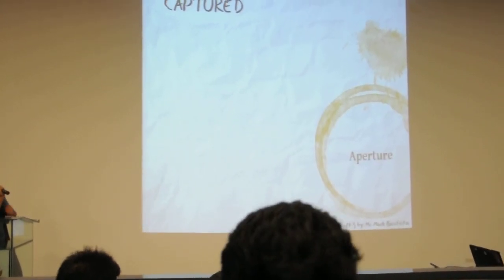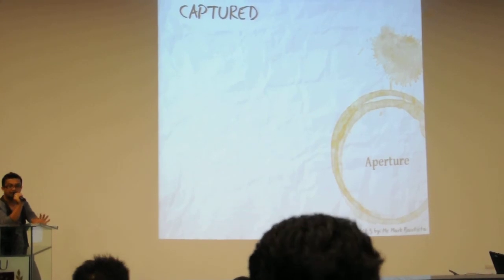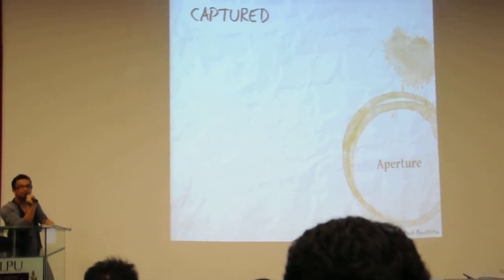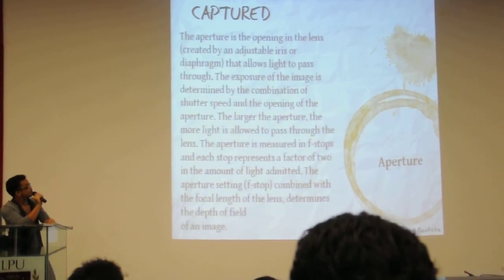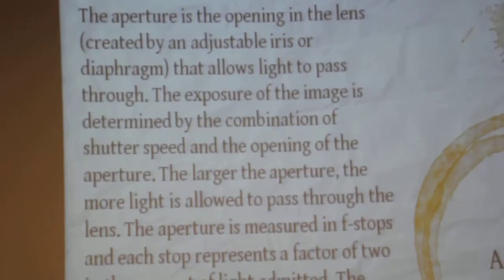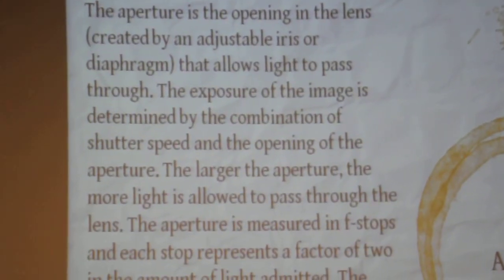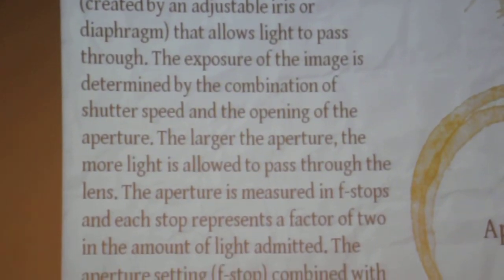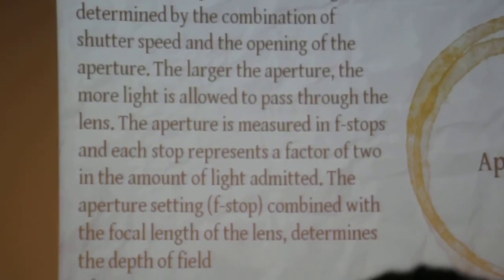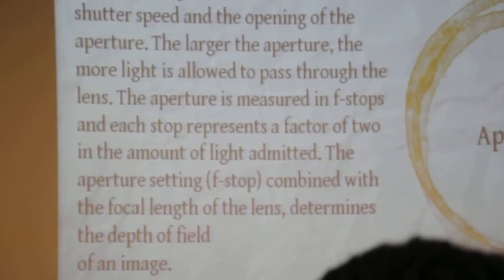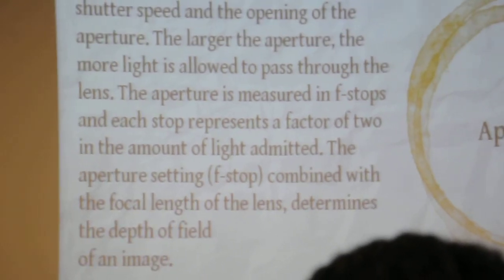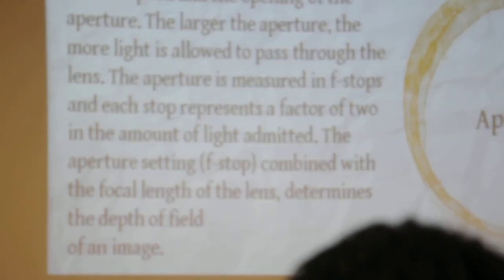While waiting, if you have questions, you may ask me after I do the talk. Just write them down and don't be afraid — I don't bite. The aperture is the opening in the lens created by an adjustable iris or diaphragm that allows light to pass through. You'll see in the lens that there is a mechanism that can be closed or open — that allows light to pass through. That is the aperture.